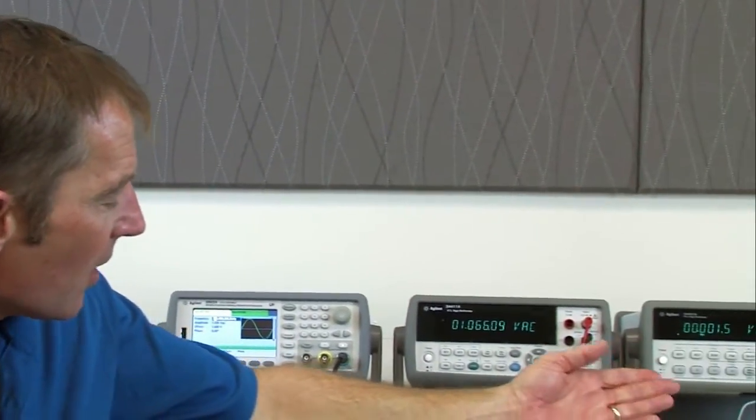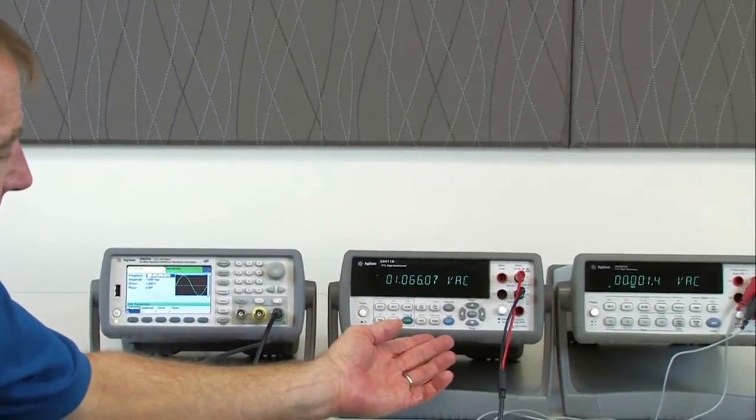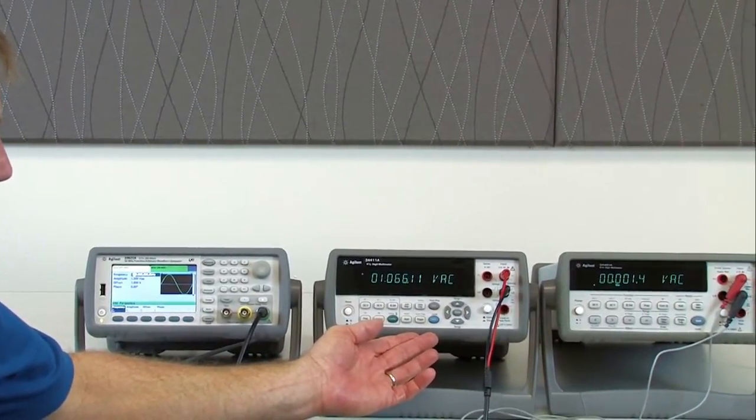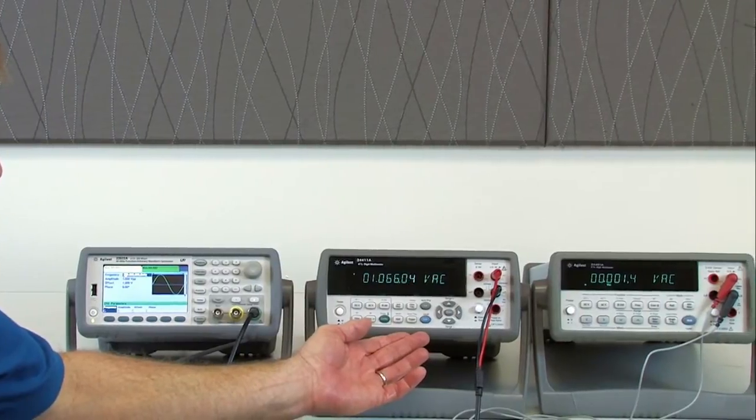Most modern multimeters use an analog technique, such as our 34401 multimeter. Our newest multimeter, the 34410A and 34411A, use a digital technique for measuring true RMS.